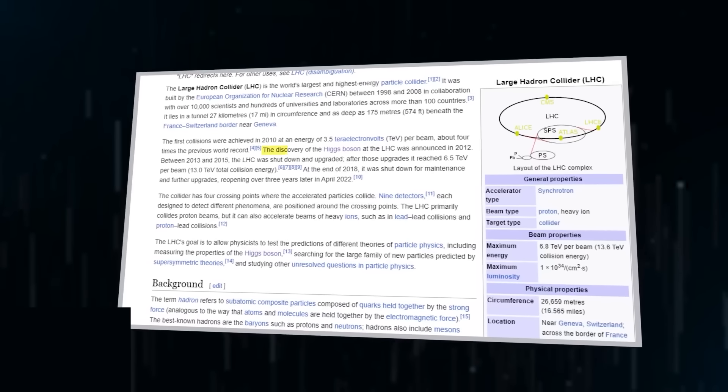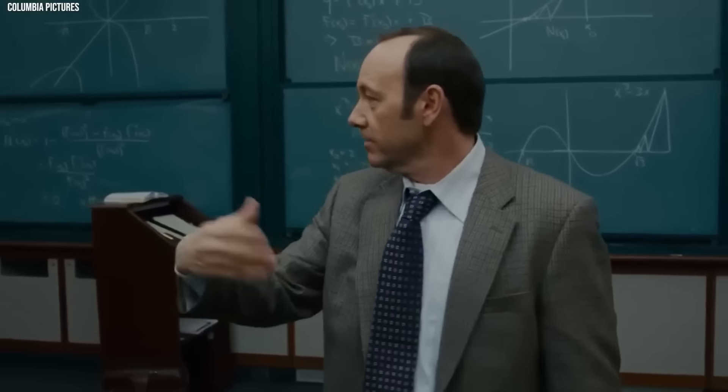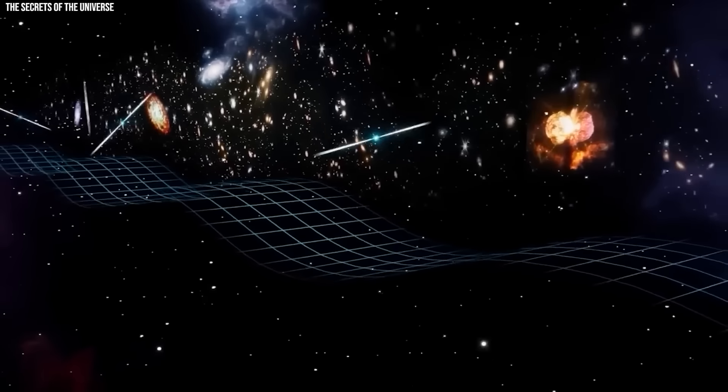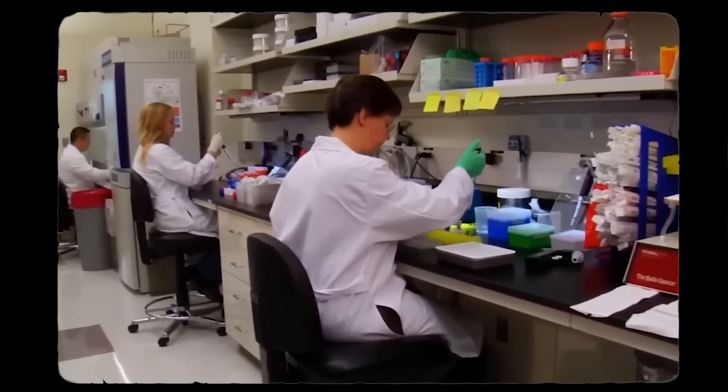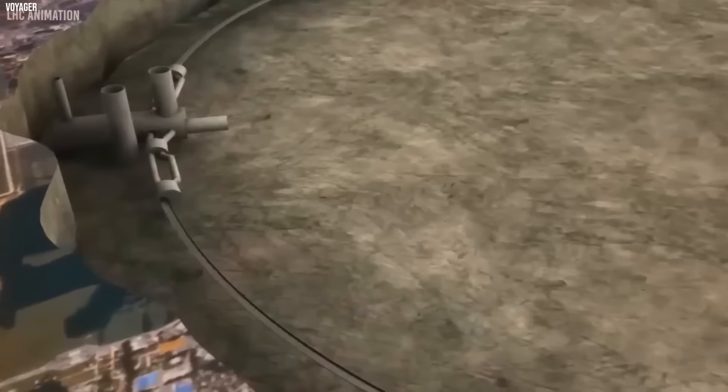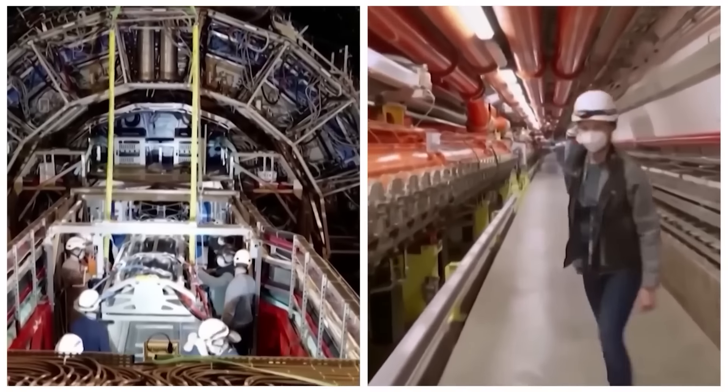The delay in discovering the Higgs boson, proposed in 1964 and discovered in 2012, has puzzled science enthusiasts. The challenge stemmed from the boson's heavy and highly unstable nature. Generating such a particle required concentrating significant energy in a small space, necessitating a high-energy collider. Upon production, Higgs particles rapidly decay in various ways, with only a fraction distinguishable from background noise. To detect them, scientists built intricate detectors and analyzed hundreds of billions of proton-proton collisions to isolate a Higgs boson signal.